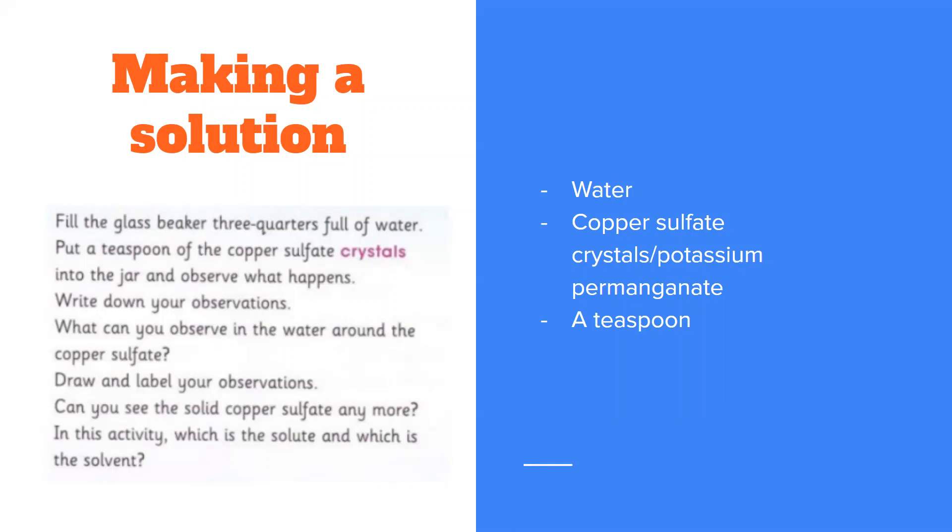You need to answer the questions. What can you observe in the water around the copper sulfate? Please draw and label your observations. Can you see the solid copper sulfate or potassium permanganate or salt crystals anymore? In this activity which is the solute and which is the solvent? Please draw it and label.